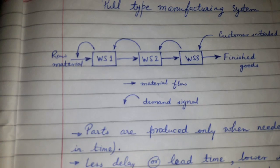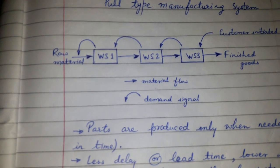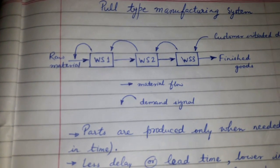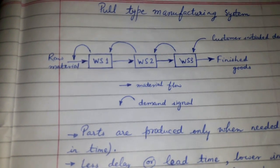Pull type manufacturing is like JIT — just in time — where only when the demand is generated, it is produced. Please like, comment, share, and subscribe. Thanks for watching.